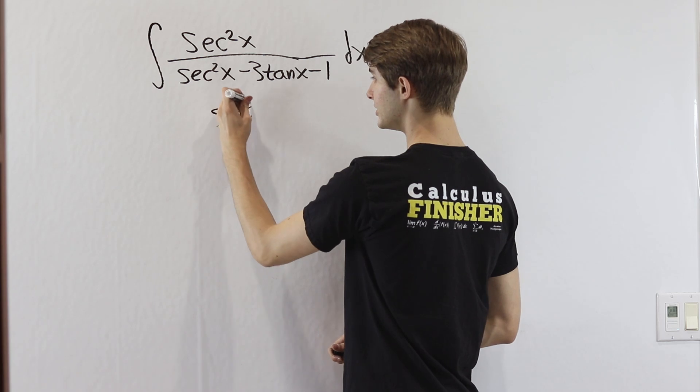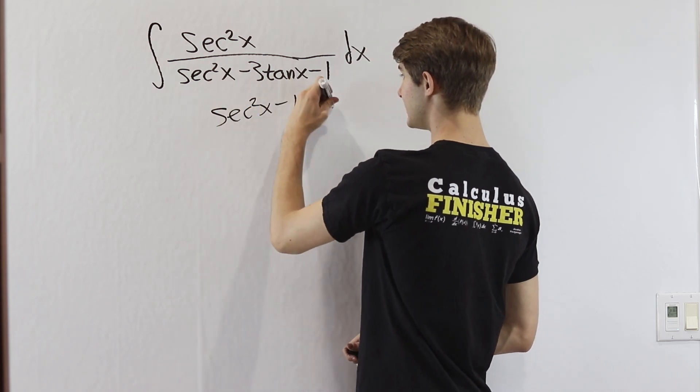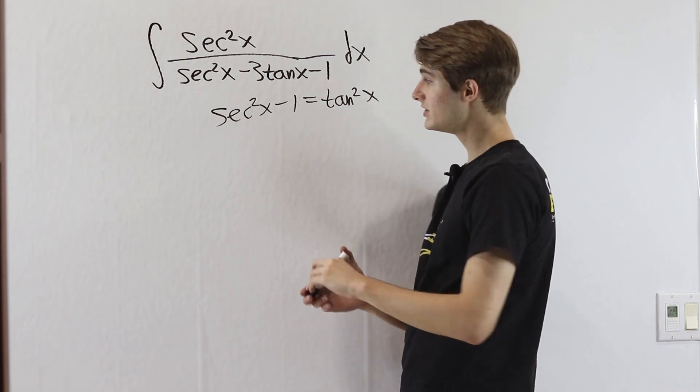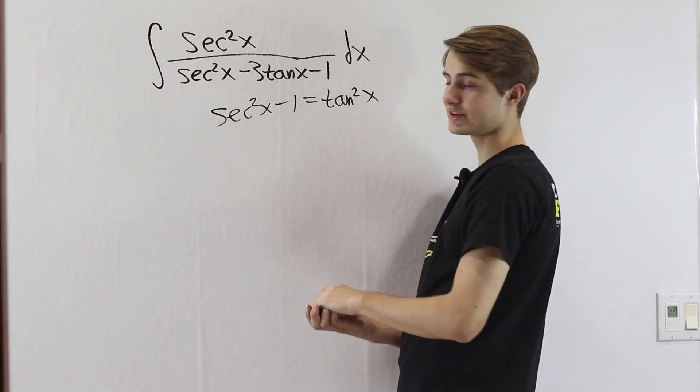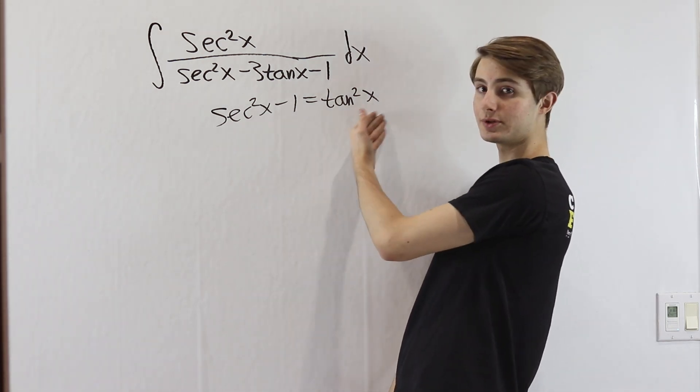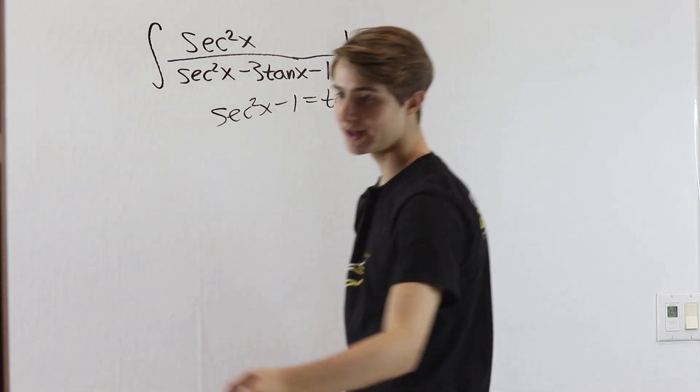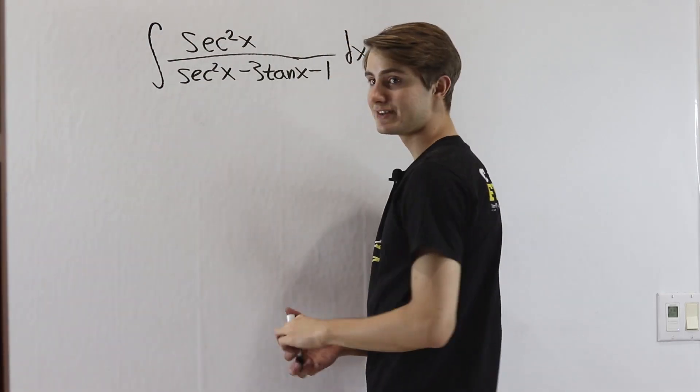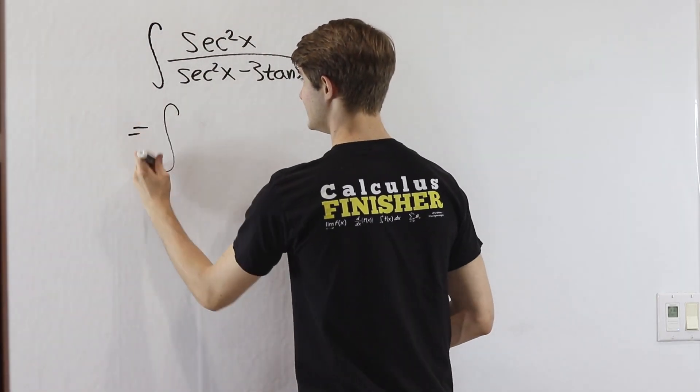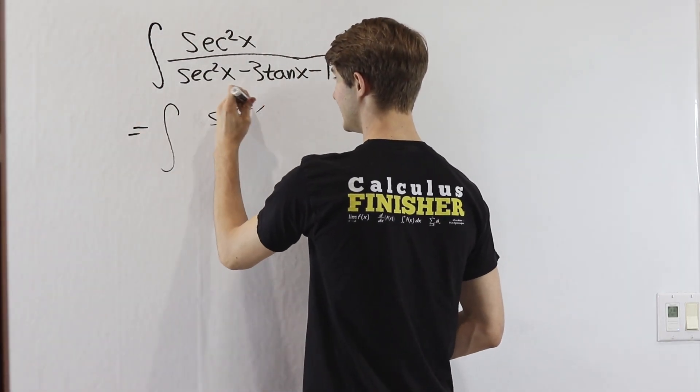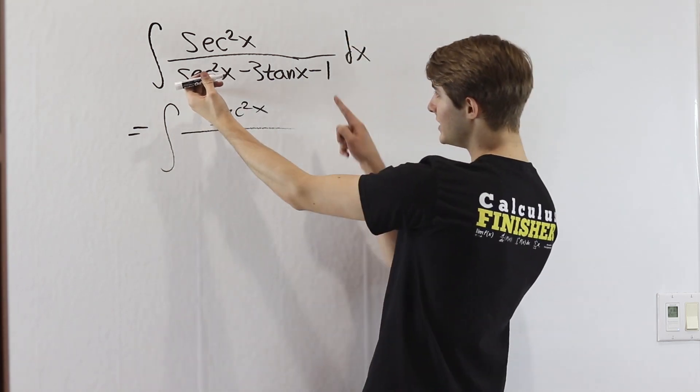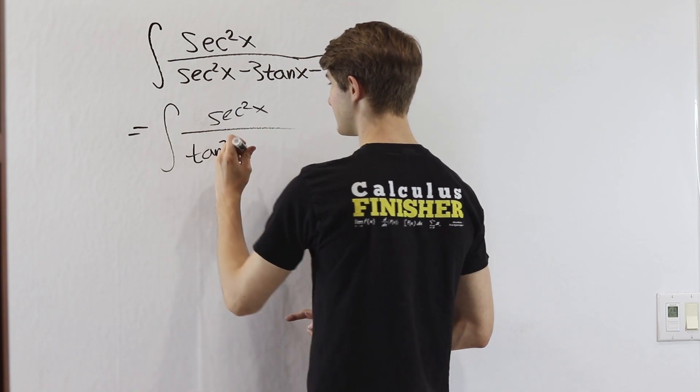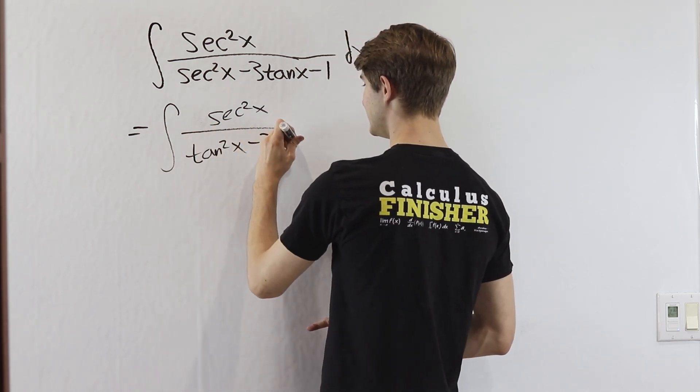We know one trig identity is secant squared x minus 1 equals tangent squared x. If you haven't seen this before you can just add 1 to both sides and see this as tangent squared x plus 1 equals secant squared x. Of course we know that's true and then that means we can simplify this a lot by rewriting it as the integral of secant squared x over, well the secant squared x minus 1 becomes tangent squared x and then minus 3 tangent x.